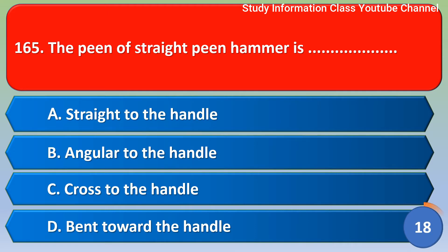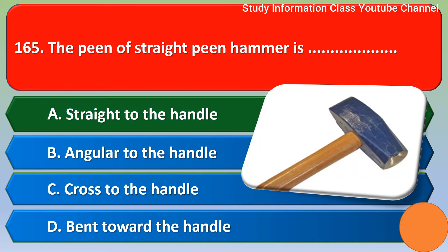Next question: the pin of a strike pin hammer is — Option A: strike to the handle. Option B: toward the handle. Option C: bend toward the handle. Option D: turn toward the handle. The correct answer is Option A — strike to the handle.